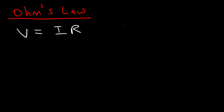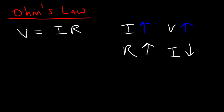Keeping the resistance constant, if you increase the voltage, the current will increase. If you increase the resistance, the current will decrease. The voltage and the current are directly related, while the resistance and the current are inversely related. The more resistance you have in a circuit, the harder it is for current to flow.